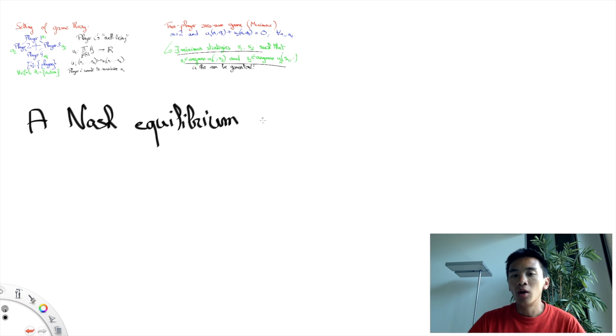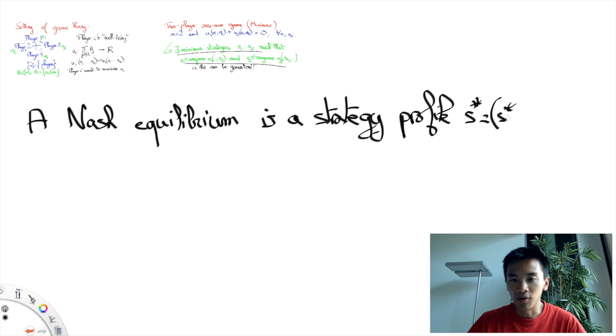More formally, Nash's equilibrium is a strategy profile s star, which consists of s1 star, s2 star, and so on, until sn star, for each player i for i going from 1 to n. Such that, for any player i,